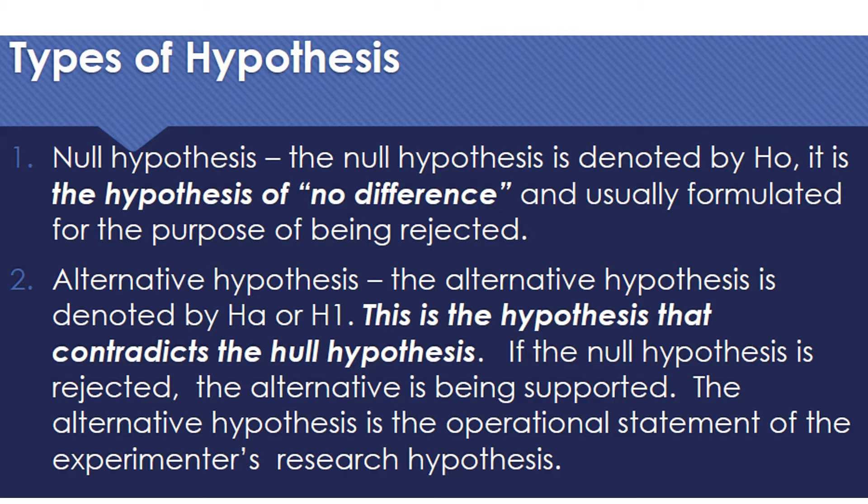Types of hypothesis: the first one is the null and the second one is the alternative, and these two are opposites. The null hypothesis is denoted by H sub 0 and it is the hypothesis of no difference, usually formulated for the purpose of being rejected. The alternative hypothesis is denoted by H sub A or H sub 1, and this is the hypothesis that contradicts the null hypothesis. If the null hypothesis is rejected, the alternative hypothesis is being supported, and the alternative hypothesis is the operational statement of the experimenter's research hypothesis.